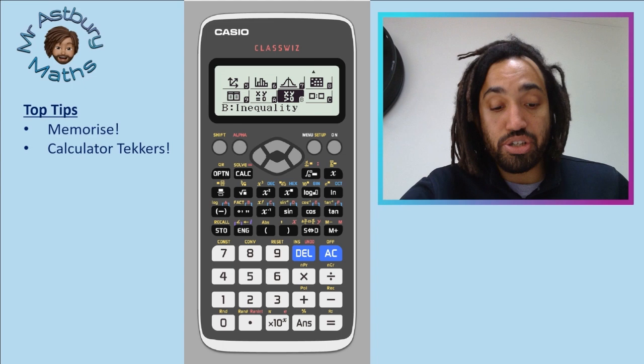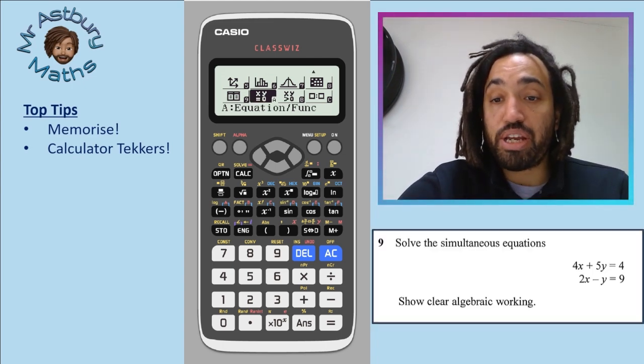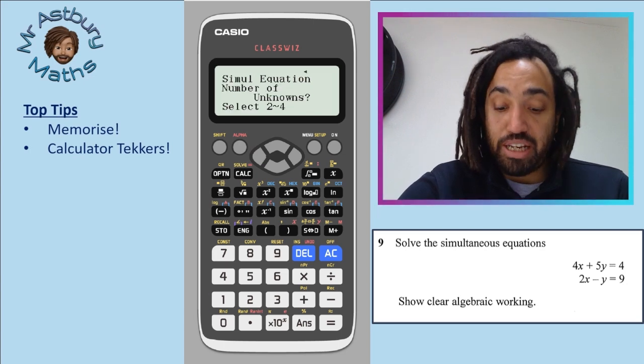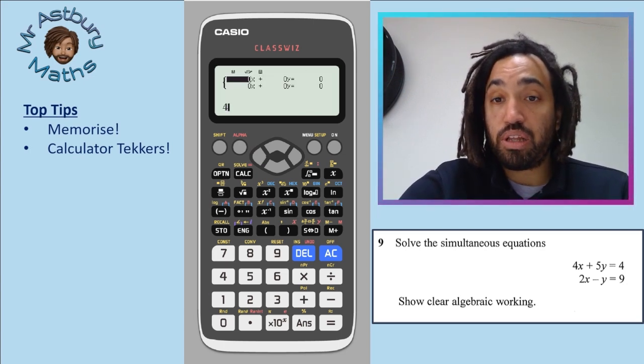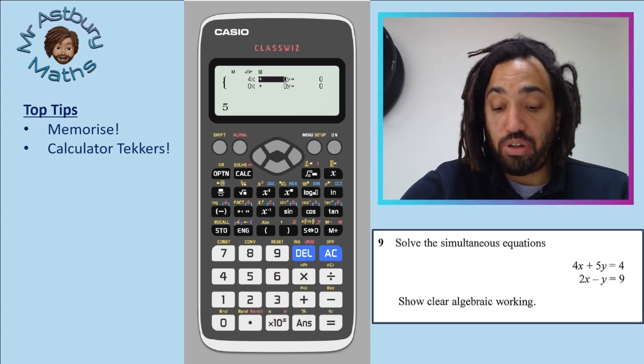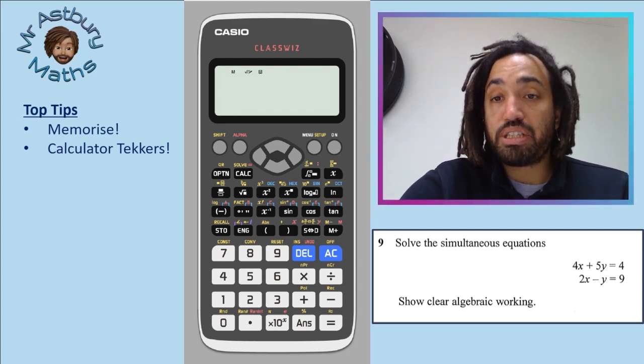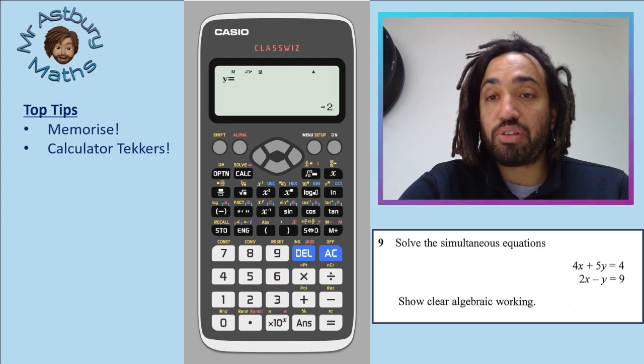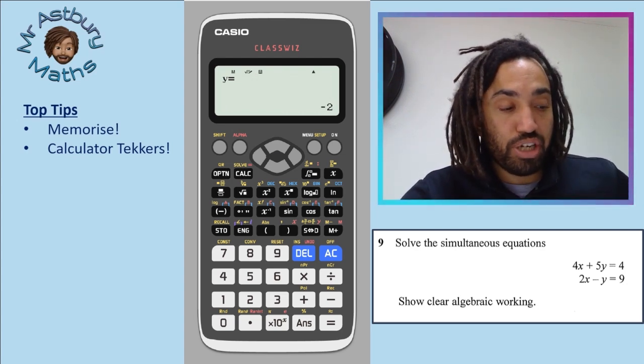Simultaneous equations. So you can go to equation again, simultaneous. And for this question here, you've got four x, five y equals four, two x minus one y equals nine. You press equals and you get x is seven over two. And y is minus two. Again, a great way of checking.